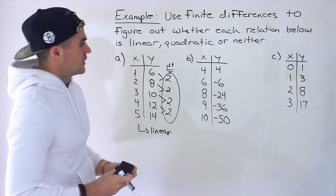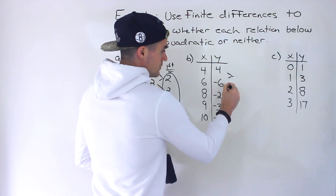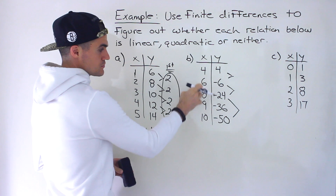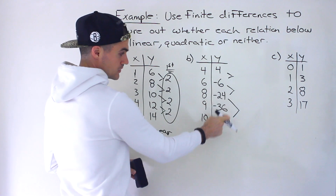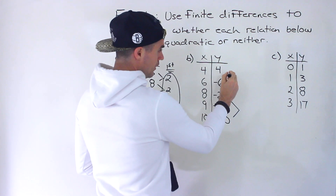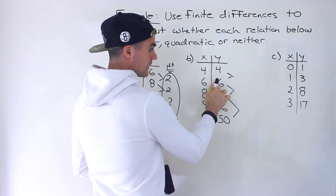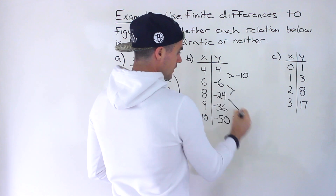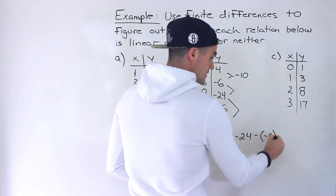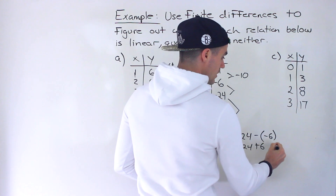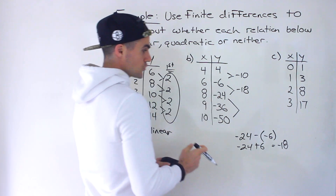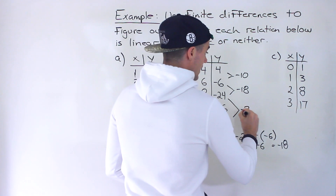Moving on to part B. We're going up by twos in x, so we take differences between the corresponding y values — skipping x = 9 and its y value of negative 36. Negative 6 minus 4 gives us negative 10. Then negative 24 minus negative 6 is like negative 24 plus 6, which gives negative 18. Then negative 50 minus negative 24 is like negative 50 plus 24, which gives negative 26.